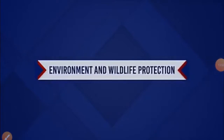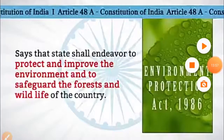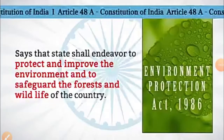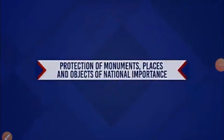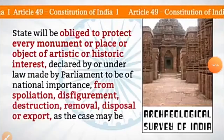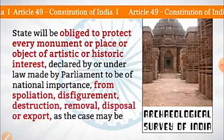The next principle is Environment and Wildlife Protection. Article 48A says that the state shall endeavour to protect and improve the environment and to safeguard the forests and wildlife of the country. The next principle is Protection of Monuments, Places and Objects of National Importance. Article 49 provides that the state will be obliged to protect every monument or place or object of artistic or historic interest declared by or under law made by Parliament to be of national importance, from spoliation, disfigurement, destruction, removal, disposal and export.